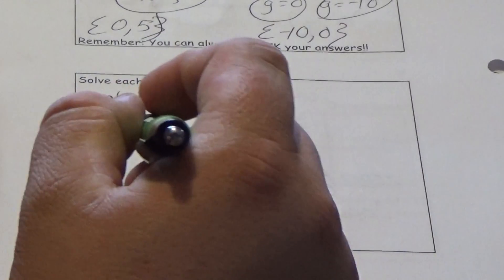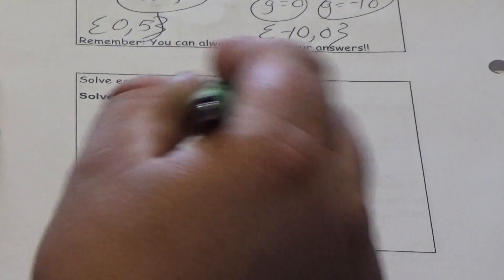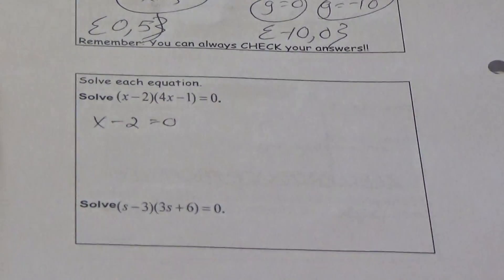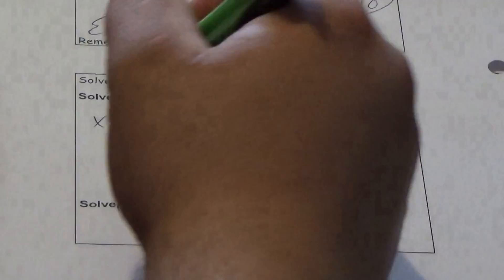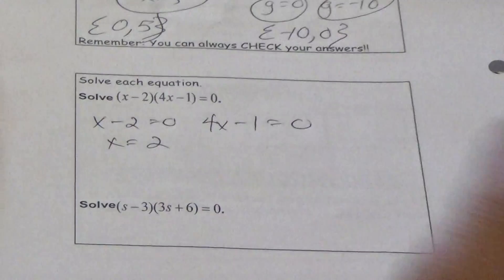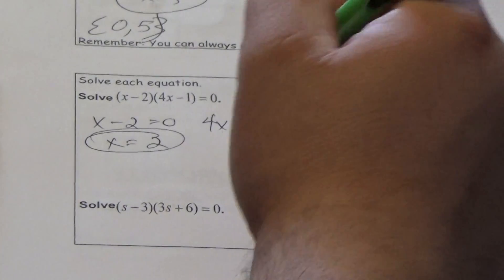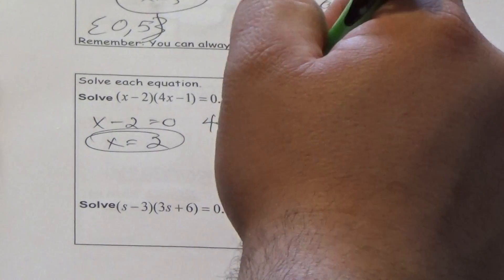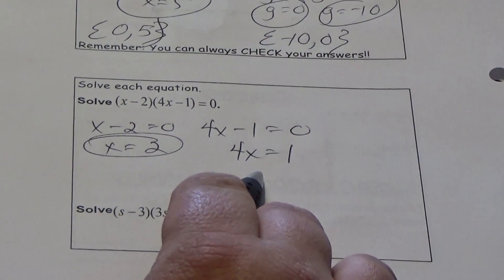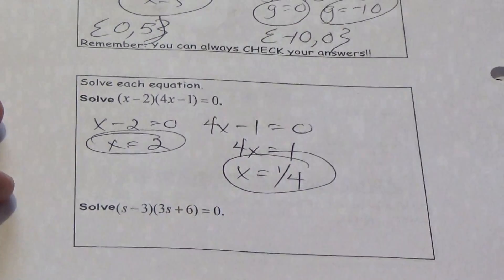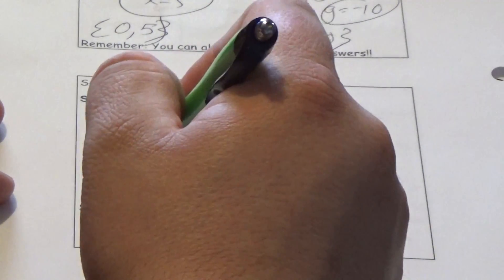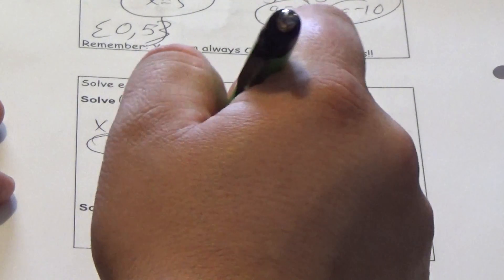The same thing happens when we have a completely factored polynomial. We take what's in the parentheses on the left, set it equal to 0, take what's in the parentheses on the right, set it equal to 0. x equals 2. Now we add 1 first and divide by 4, so we get x equals 1 fourth. So we put this in set builder notation as {1/4, 2}.